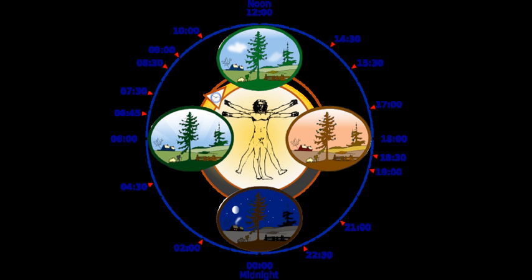A circadian cycle was first observed in the 18th century in the movement of plant leaves by the French scientist Jean-Jacques Dordas de Maron. In 1751, Swedish botanist and naturalist Carl Linnaeus designed a flower clock using certain species of flowering plants.